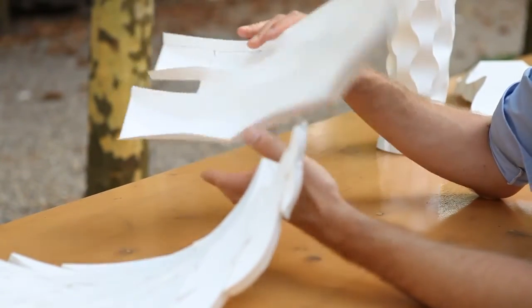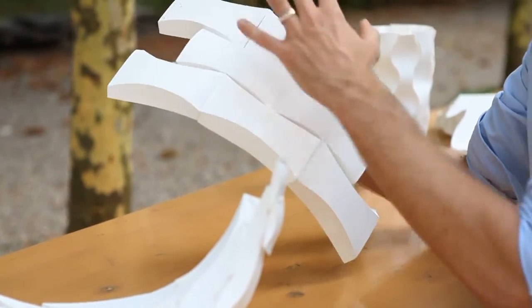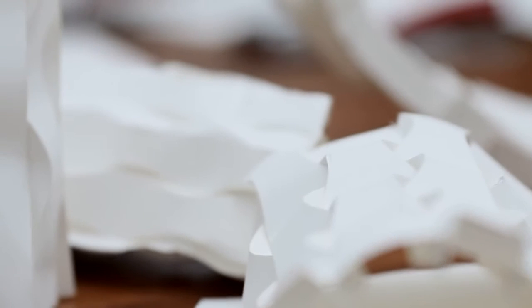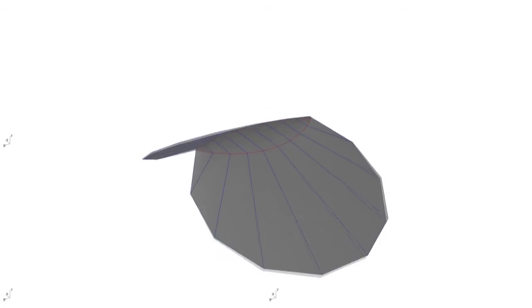We have other systems here which can accommodate some of the changes in geometry. We always tend to start with physical models which give us information and understanding about the material possibilities, geometric possibilities, and assembly possibilities before we build computational models. Now we can start to build these in Grasshopper.